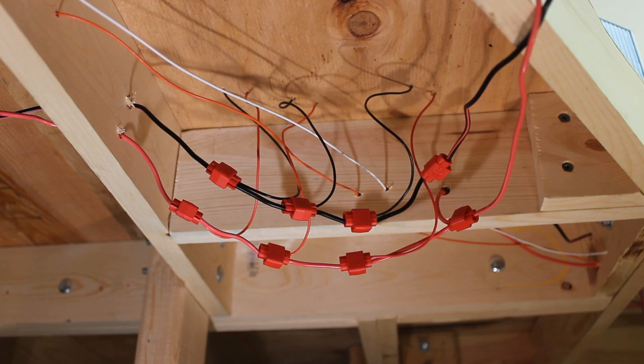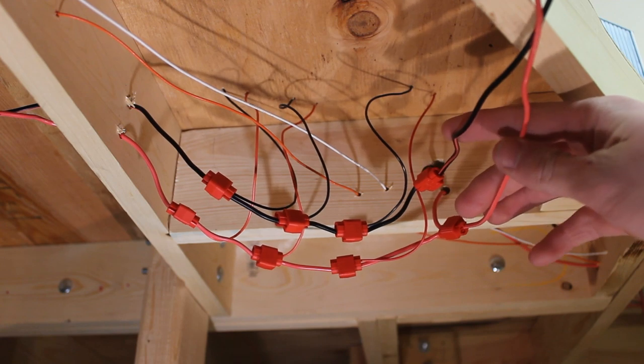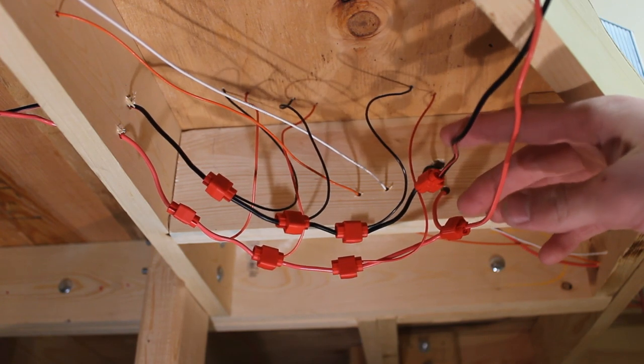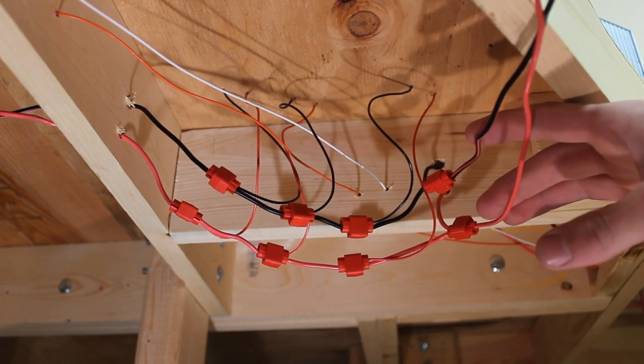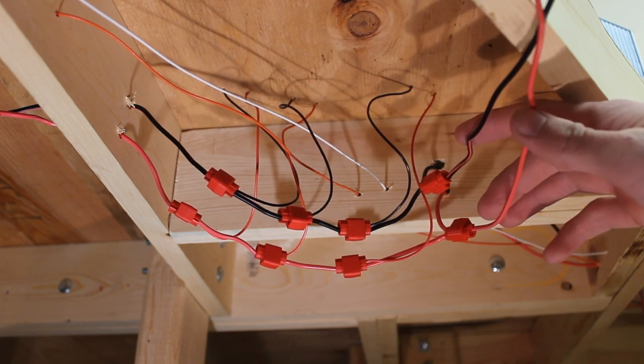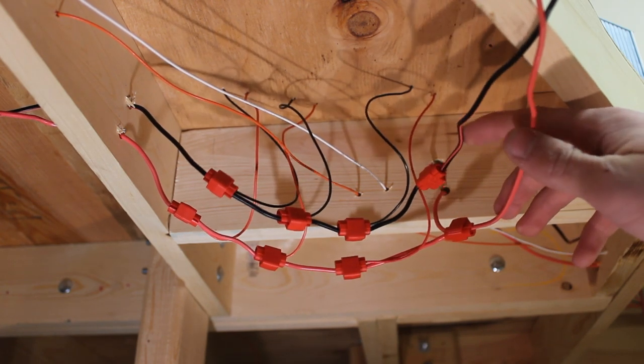So here we are under the layout. And these two wires here, the red one and the black one, are the ones that are coming from my power supply. And as you can see there are quite a few wires here but it's all pretty simple.